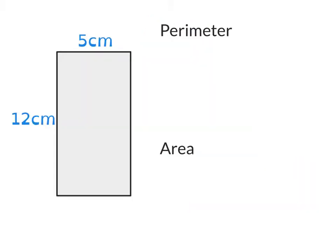Let's begin by looking at a basic shape. Here we have a rectangle measuring 5 centimeters by 12 centimeters. The first thing we're going to work out is the perimeter of the shape, so we're going to calculate the distance from point X all the way around the shape and back to point X. We're adding up all four sides. Opposite the 5 centimeter line we have another 5 centimeter line, and opposite 12 centimeters you've got another 12 centimeter side.